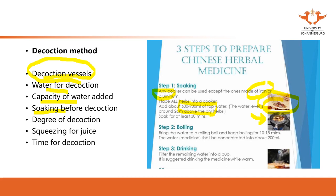After soaking, use the same water and bring to a rolling boil. Keep boiling for 10 to 15 minutes until the liquid is concentrated to about 200 ml, then filter — that's the liquid you're going to drink. One package, one dose of herbs, can be cooked twice: after the first cook yielding 200 ml, add water again to the herbs and cook a second time with the same process.